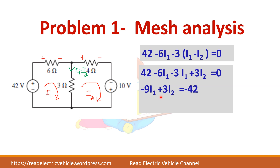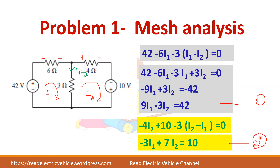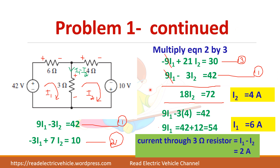Simplify that equation to get the first mesh equation. Next, write for Loop 2. Starting from the reference point: minus 4·I2, then negative to positive gives plus 10, minus 3·(I2 − I1) = 0. So you get two equations. We have already solved these two equations and the answers we need to get are I1 = 6 amps and I2 = 4 amps.